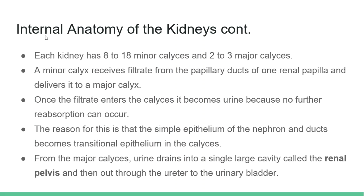Each kidney has 8 to 18 minor calices and 2 to 3 major calices. A minor calyx receives filtrate from the papillary ducts of one renal papilla and delivers it to the major calyx. Once the filtrate enters the calices, it becomes urine because no further absorption can occur. The reason for this is that the simple epithelium of the nephron and ducts becomes transitional epithelium in the calices.